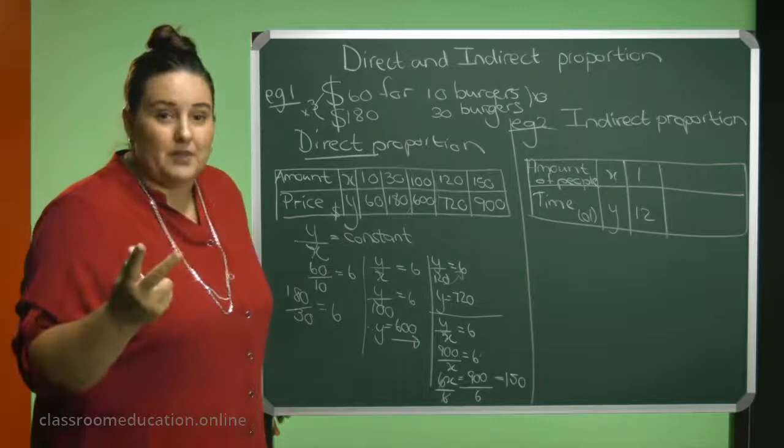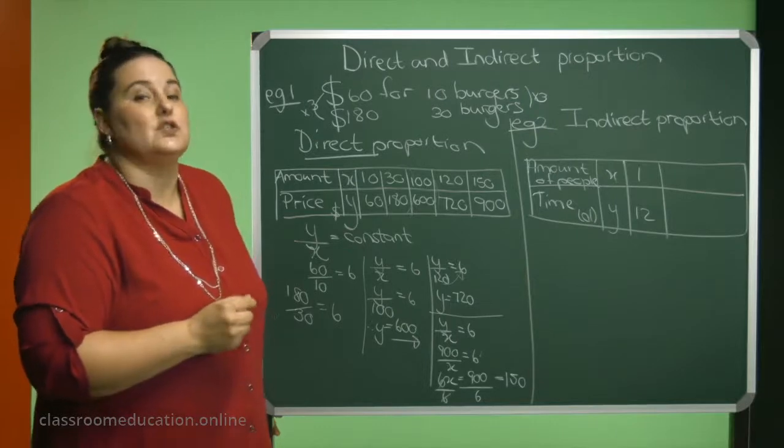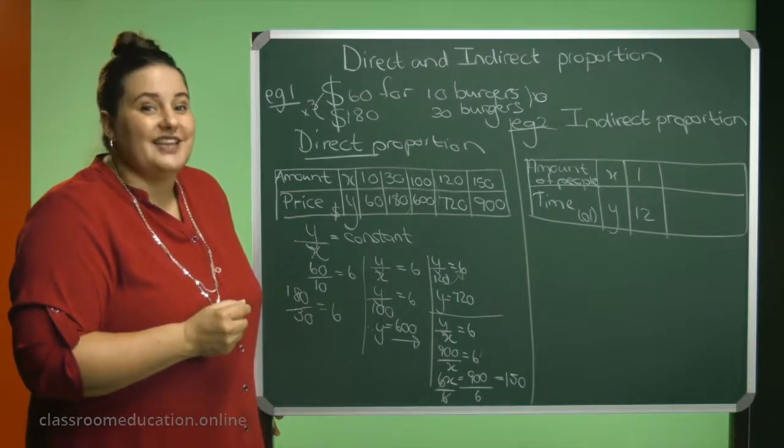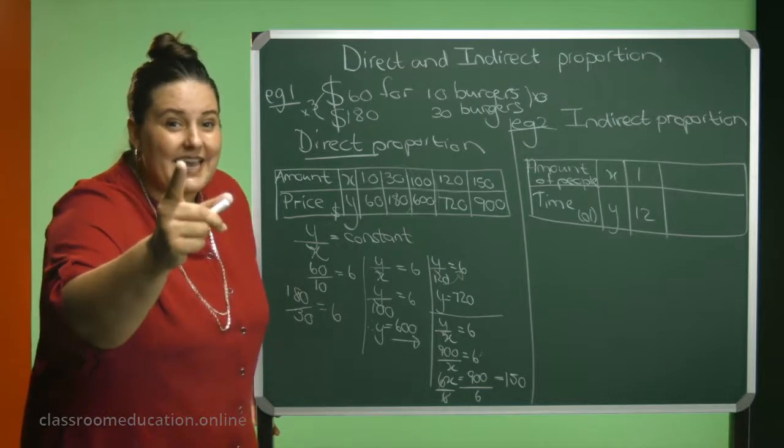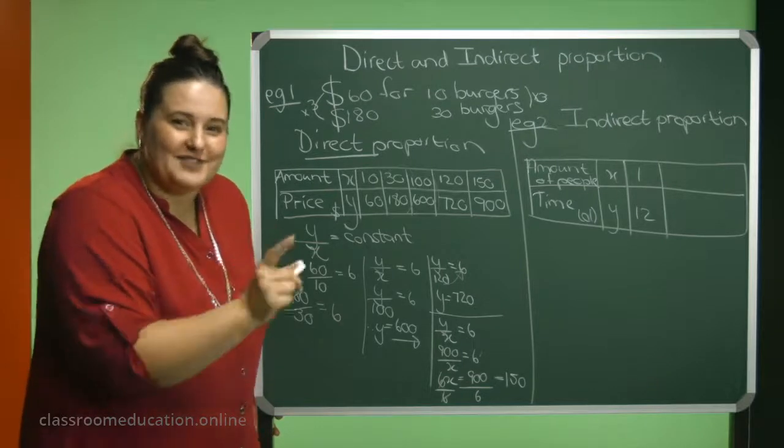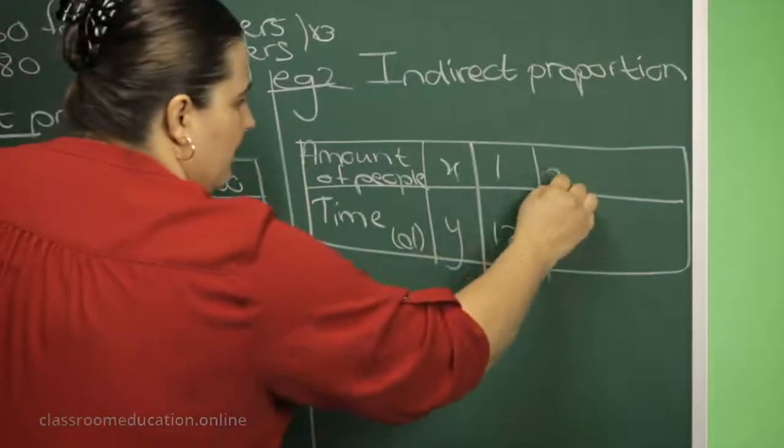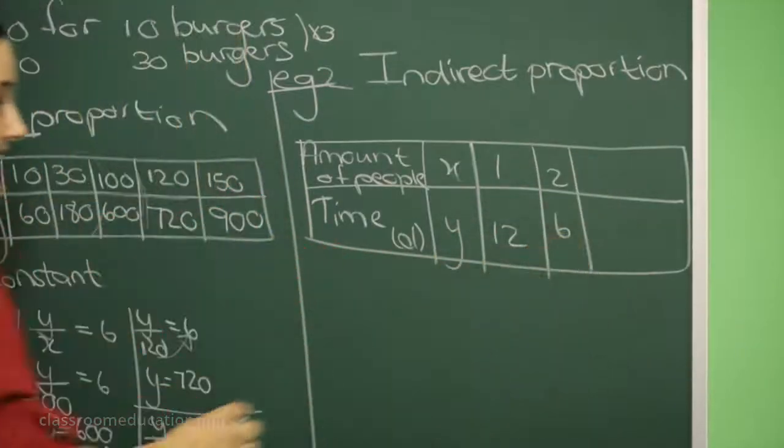And if you are two people, how long will it take to paint the house? Would you like to guess? What would you say? Six days. Please, careful, it's not 24. It is six days. Two people will paint the house in six days.